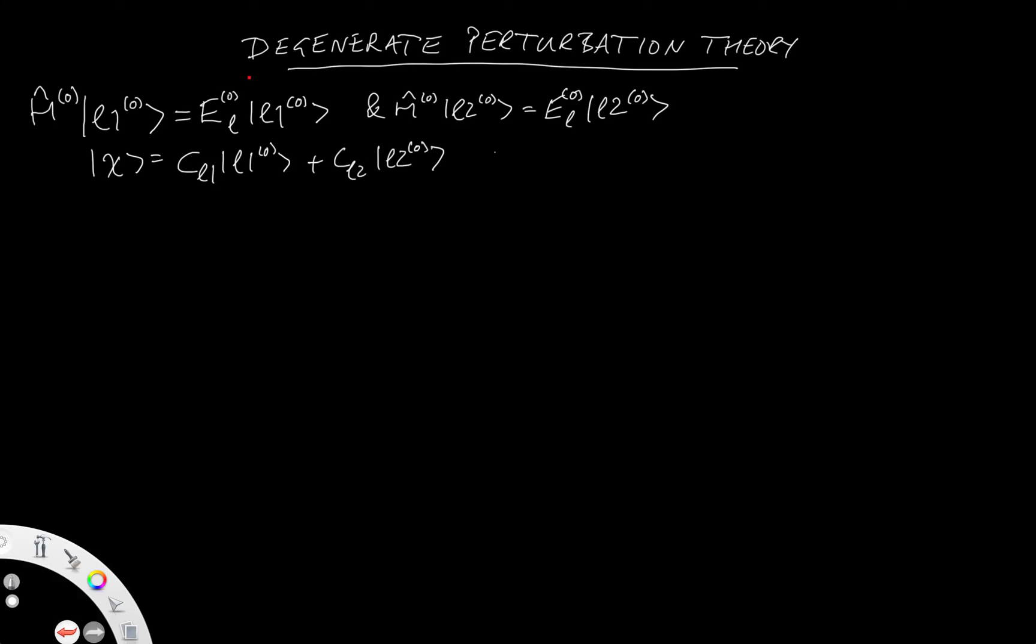And then if we apply H0 onto chi, we will get E_L0 multiplying chi for all values of C_L1 and C_L2. Now, normally this isn't a problem. If you want to, you can think about an xy plane. It doesn't actually matter which way the x-axis points, so long as the y-axis is orthogonal to it. And that's exactly what we're doing here. They would be rotating L1 and L2 around to create different states.